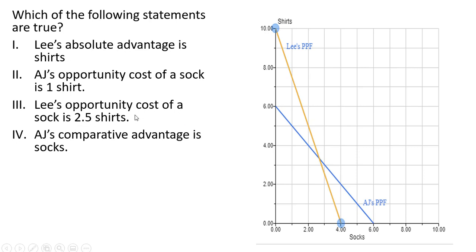Statement 3: Lee's opportunity cost of a sock is 2.5 shirts. Let's look at Lee's PPF and calculate the opportunity cost of producing one sock. It's going to be the vertical intercept divided by the horizontal intercept, so 10 divided by 4, or 2.5, is indeed Lee's opportunity cost of producing one pair of socks.